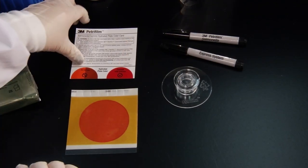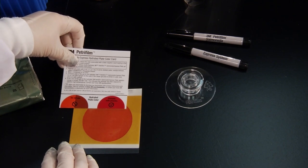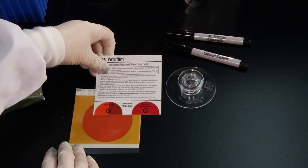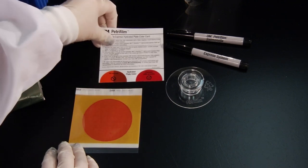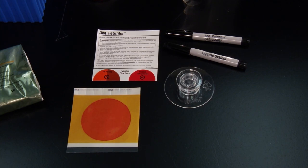After a few minutes, check the hydrated plate gel color using the 3M PetriFilm Salmonella Express Hydrated Plate Color Card. If the gel color is red, the plates are good to use. If the gel color is orange to brown, the plates have been exposed to extreme high temperatures and product performance may be impacted. Do not use the plates and contact your local 3M food safety representative.